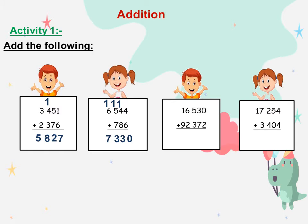The next question: 16,530 plus 92,372. Ones with ones: 0 plus 2 equals 2. 3 plus 7 equals 10, so we will write 0 and carry up 1. 1 plus 5 is 6. 6 plus 3 equals 9. 6 plus 2 equals 8. 1 plus 9 equals 10.